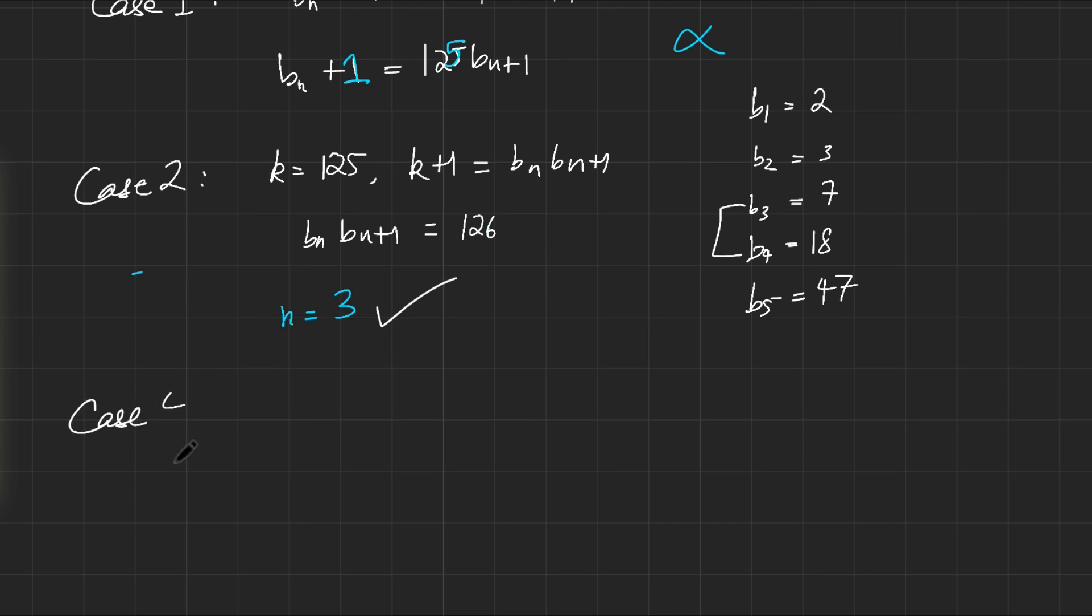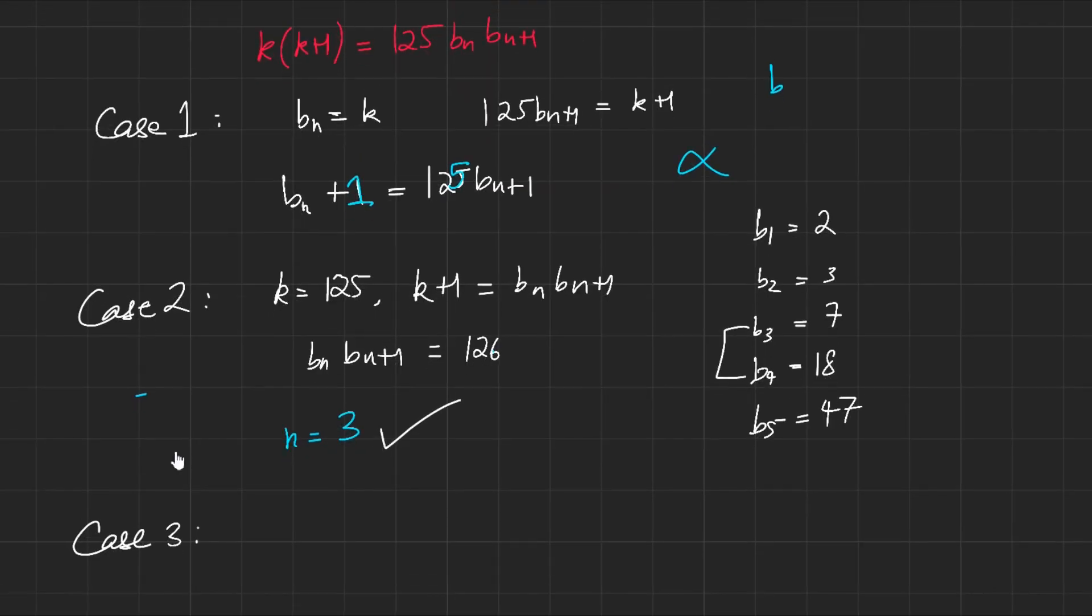All right, let's check for more cases. Case number 3, we can have, instead of k being 126, instead of this being matched to this, we could have k+1 is 125. That would mean k equals 124. But wait a second. When k equals 124, that would mean that bₙ times bₙ₊₁ equals 124. But obviously, that has no solutions as we've just checked. So case number 3, no solutions.